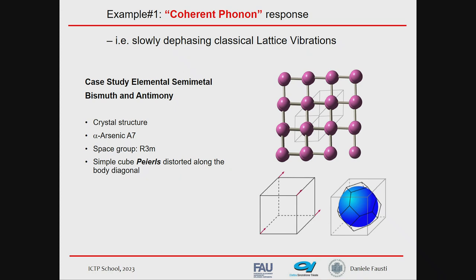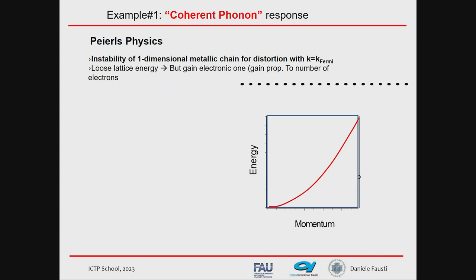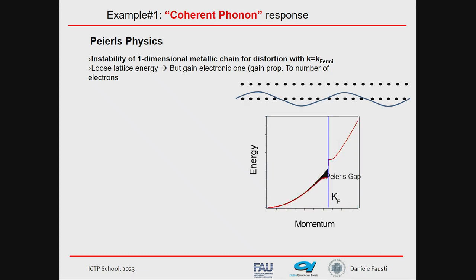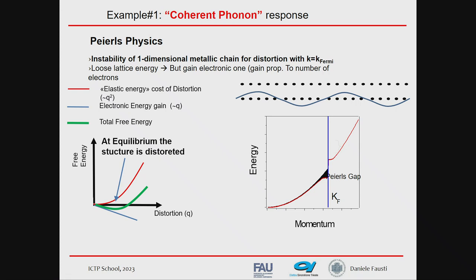There are many examples where coherences are relevant. A classic case study is the coherent phonon response in elemental semi-metals — essentially elemental crystals where the physics of one-dimensional Peierls systems is at play. If I have a one-dimensional metallic chain, it is unstable for a distortion at the Fermi vector because the energy cost of distortion is quadratic while the electronic energy gain is linear with the distortion itself, so a metallic chain is essentially always distorted. These elemental semi-metals are a 3D version of this one-dimensional physics.